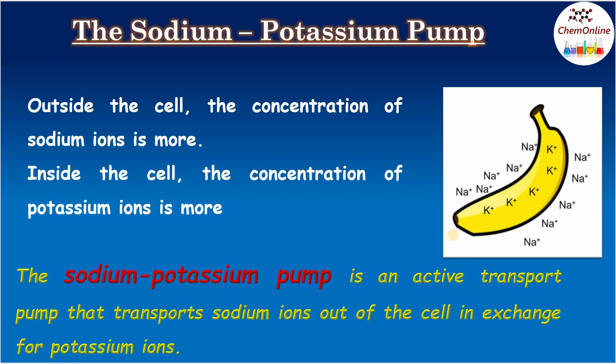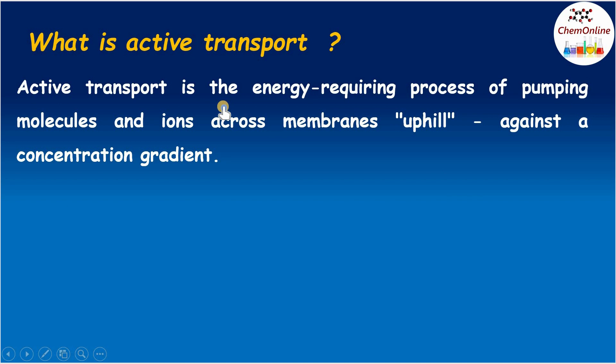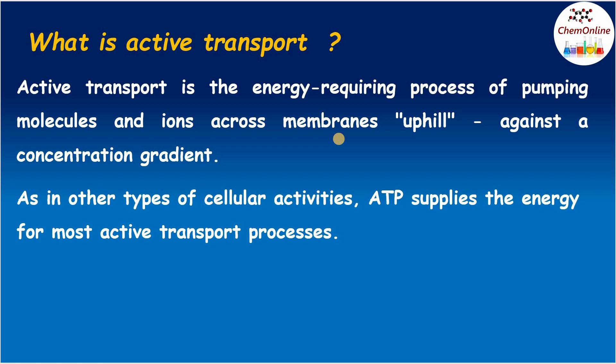That is done with the help of the sodium potassium pump, which is an active transport pump that transports sodium ions out of the cell in exchange for potassium ions. An active transport process is an energy-requiring process of pumping molecules and ions across membranes uphill, that is against a concentration gradient. The sodium potassium pump is a very good example of active transport occurring in cells.